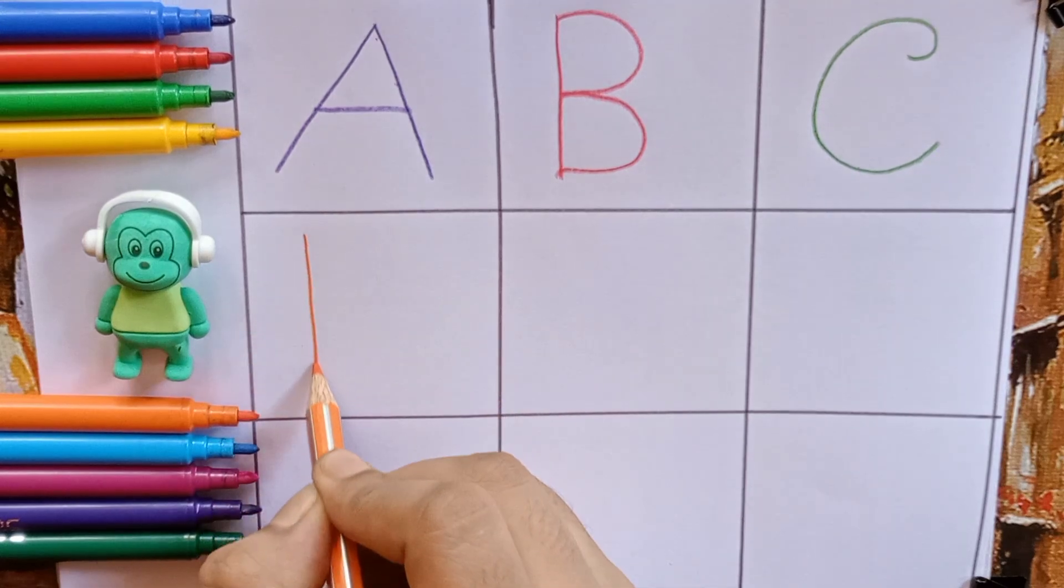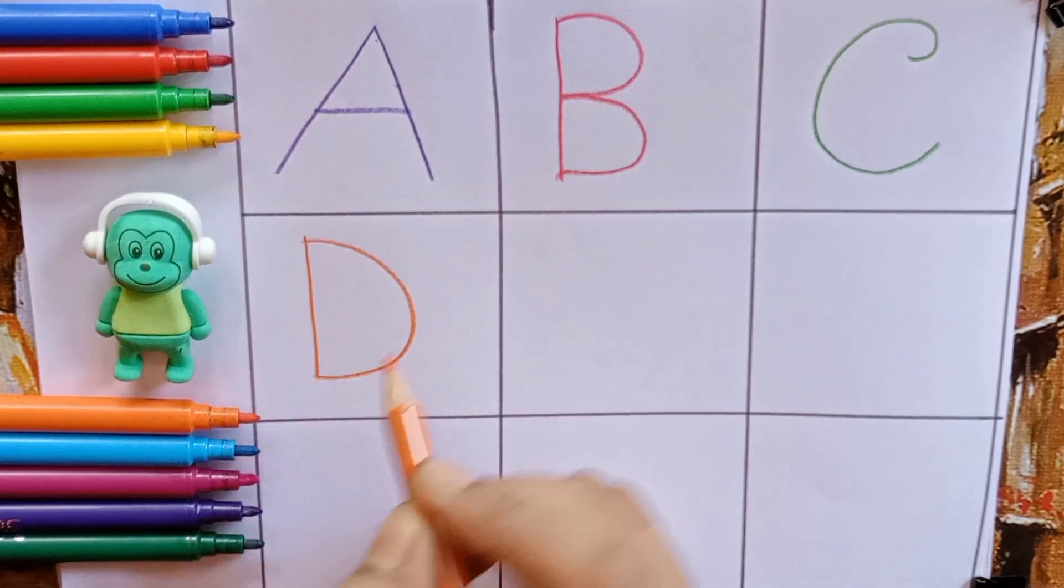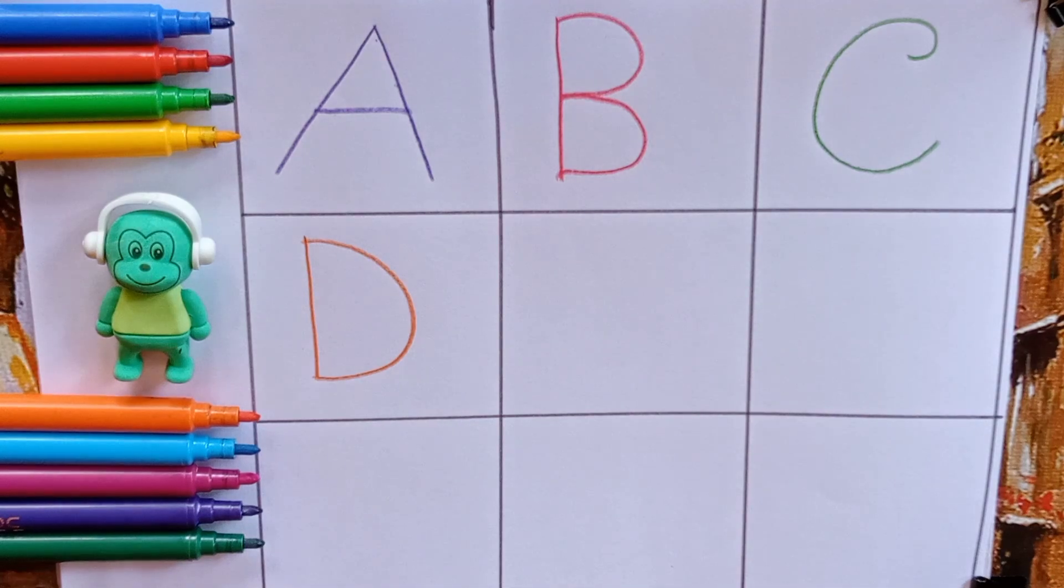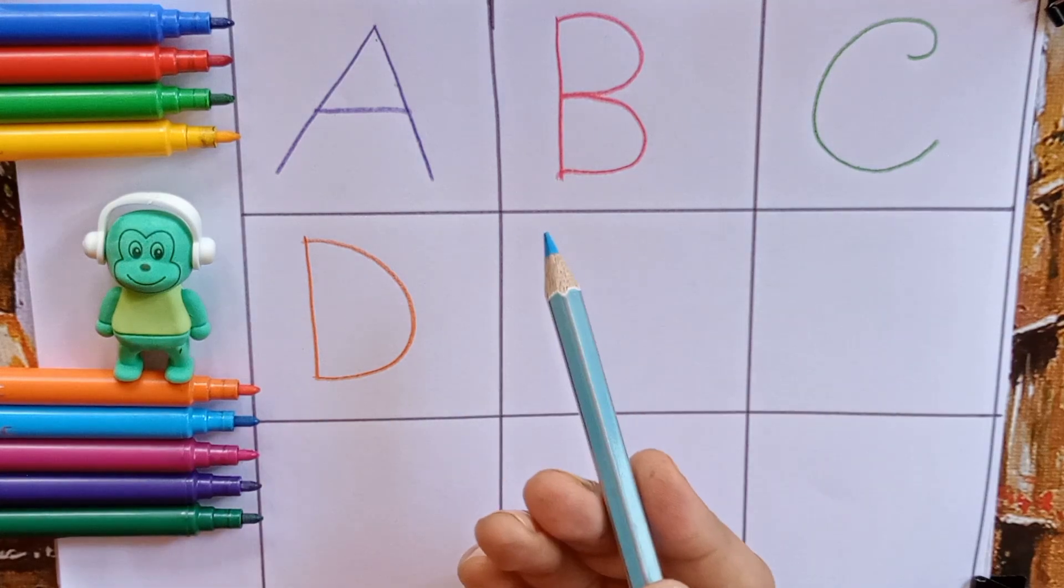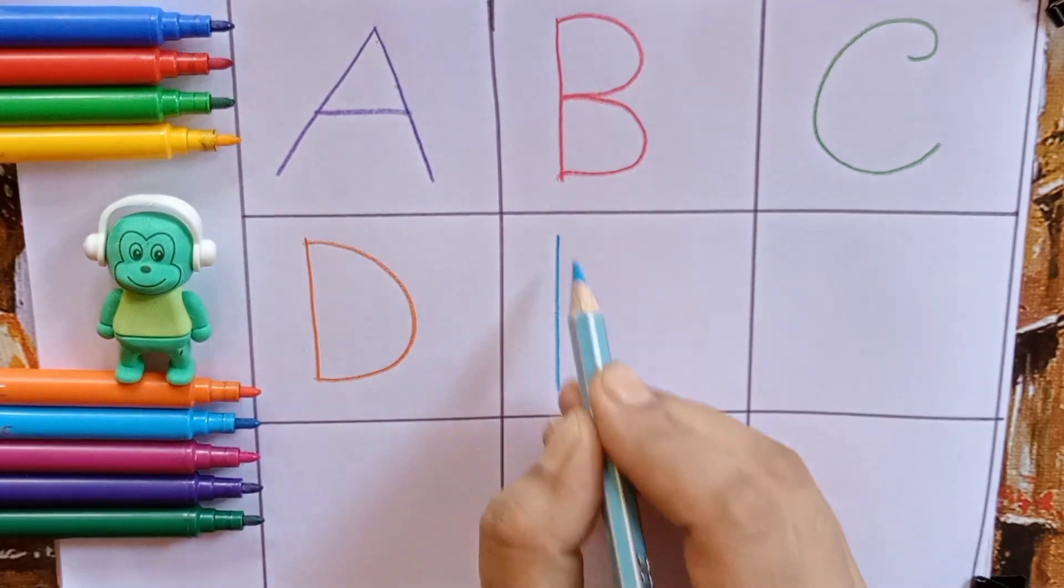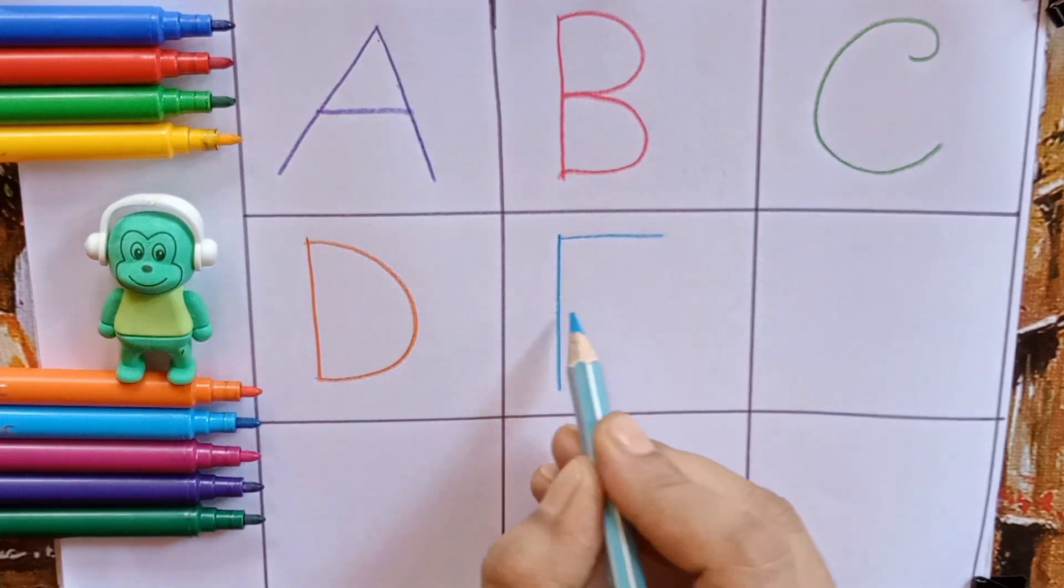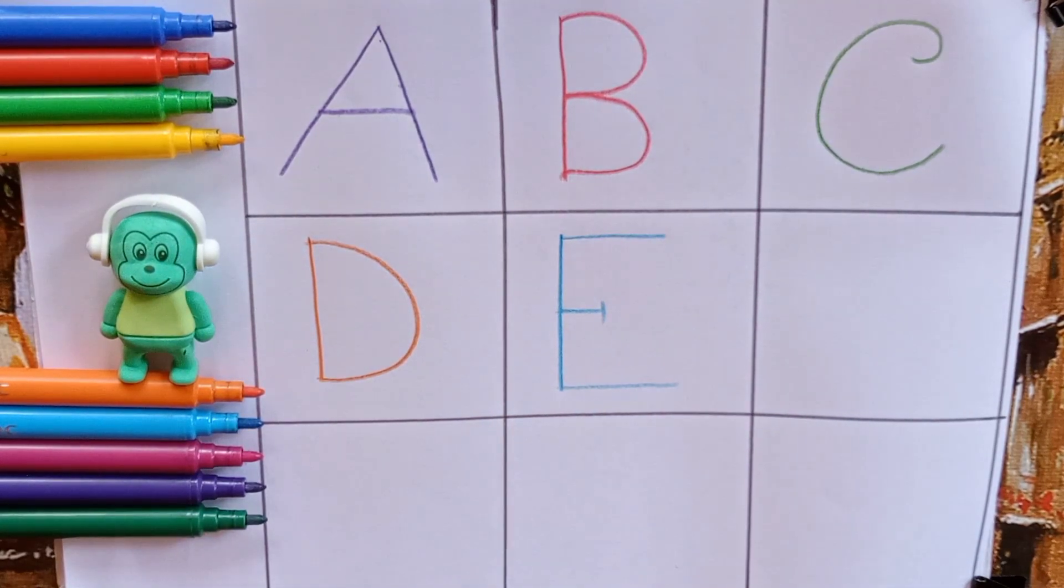D. D for dog. Dog is an animal. D. Our next color is sky blue. Blue. E. E for emu. Emu is a bird. E.